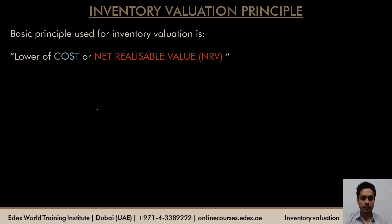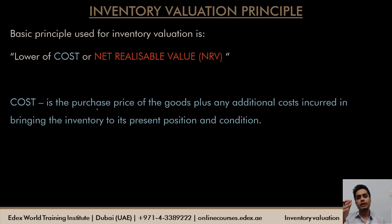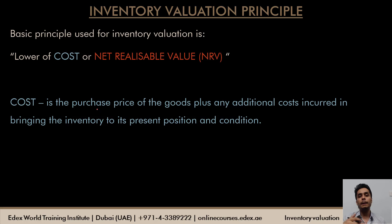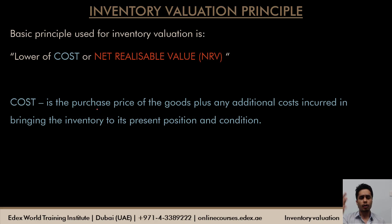Let's understand the meaning of cost and NRV. Cost is the price at which the company has purchased goods from the supplier — the purchase price — but it also includes whatever expenses have been paid to get the inventory to its current location of sale. For example, if a company purchases an inventory item for $20 but incurs carriage inward of $1 per unit, the total cost is $21 per unit. Apart from carriage inward, any duties or other expenses paid before we get the inventory to our current location are also included.